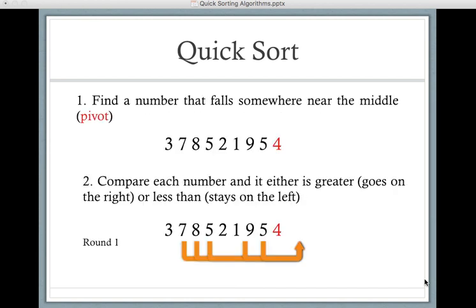So the first thing you do is you have your group of numbers. You're going to pick a number that falls somewhere near the middle. That's called a pivot. So in this case, we just kind of look at the numbers and we're going to choose the number 4 as our pivot.